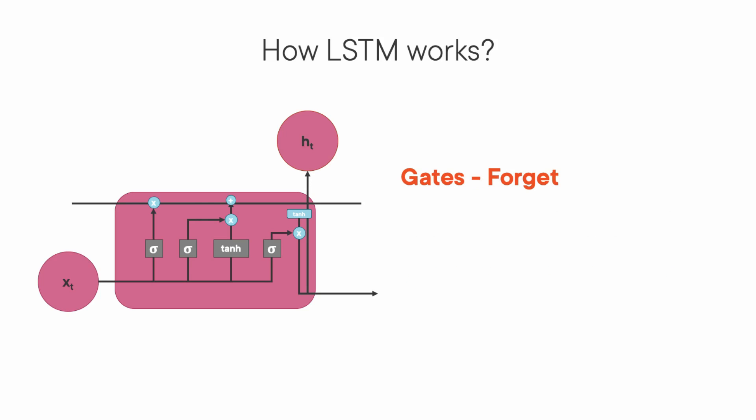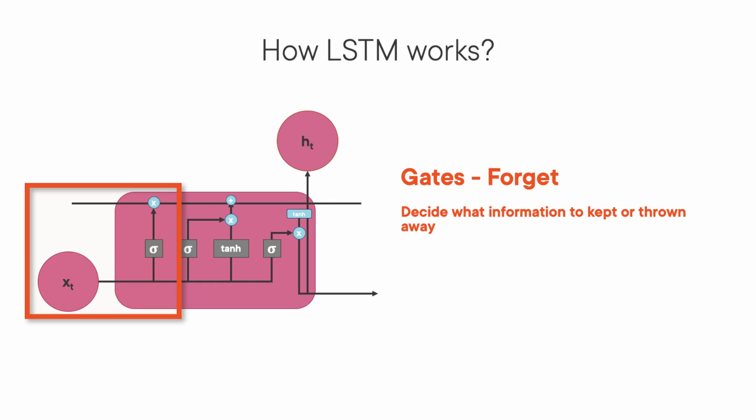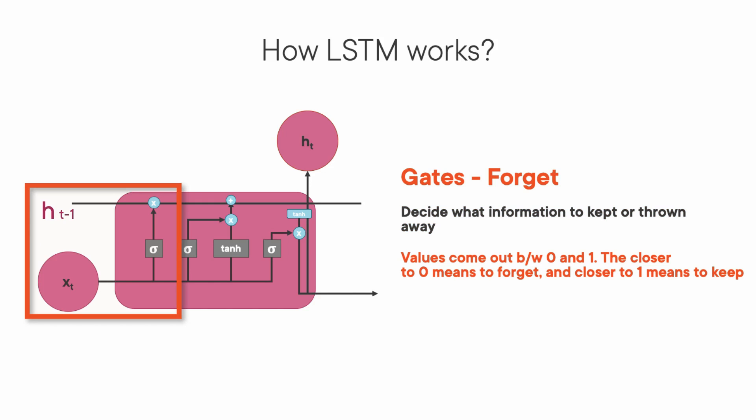The first one is the forget gate, as shown in the highlighted portion of the diagram. This gate decides what information should be thrown away or kept. Information from the previous hidden state ht-1 is passed through the sigmoid function. Values come out between 0 and 1 — closer to 0 means to forget and closer to 1 means to keep. That's the reason we are not modifying the state of the cell when this value is 1.